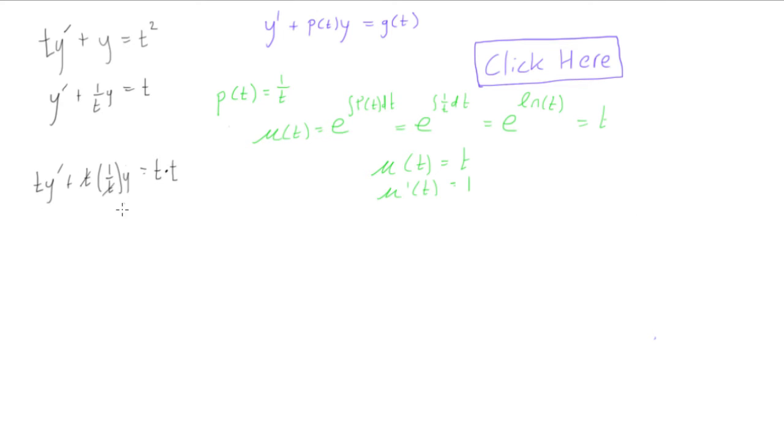So what we can do is we can rewrite the left-hand side of the equation as the derivative of mu times y. And mu is also equal to t in this case. So that is exactly the same thing. So if we took the derivative of mu times y, which is mu is equal to t, we would get this expression. And this is all equal to t squared.